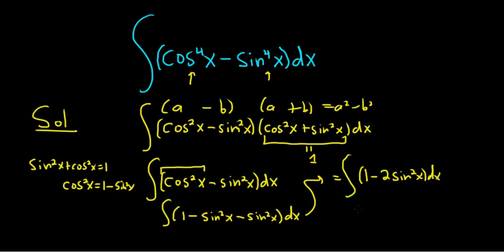1 minus 2 sine squared x, that's a trig identity. Again, that's cosine 2x, right, dx.